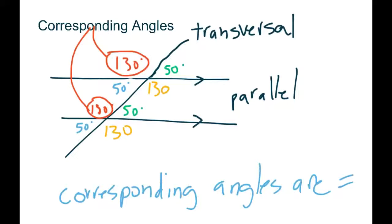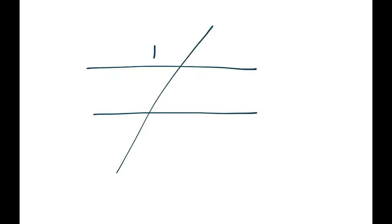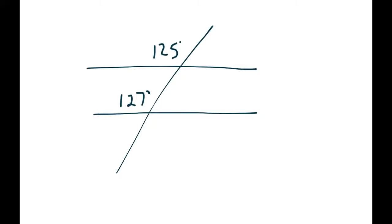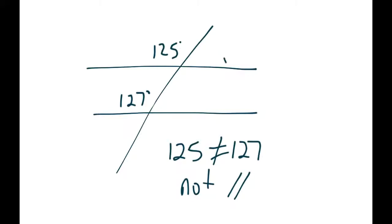The reverse also works: if we have two lines and we're not sure if they're parallel, and the angle up here is 125 degrees and the corresponding angle down here is also 125 degrees, then those lines have to be parallel. On the other hand, if this angle is 125 and the one below is 127 degrees, they're not equal, so those are not parallel lines. The rules work both ways — you can use angles to determine whether lines are parallel, or if you know they're parallel, the corresponding angles must be equal.